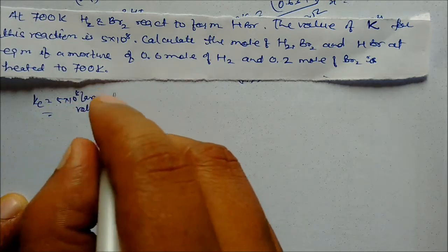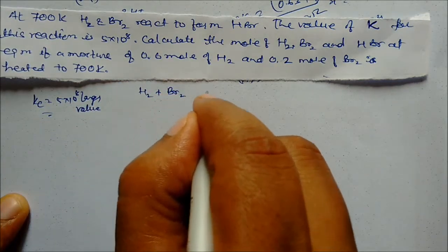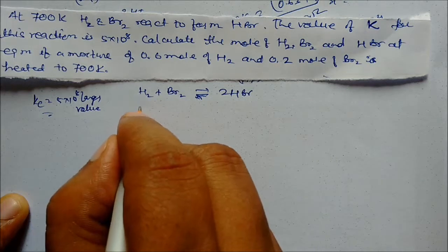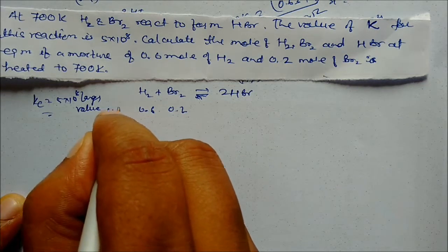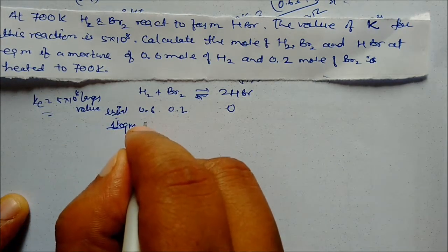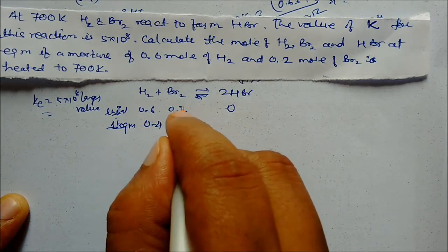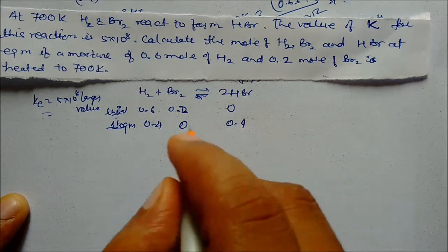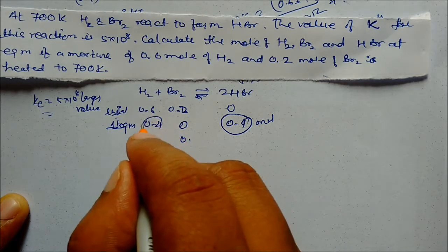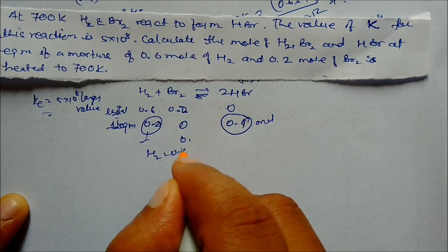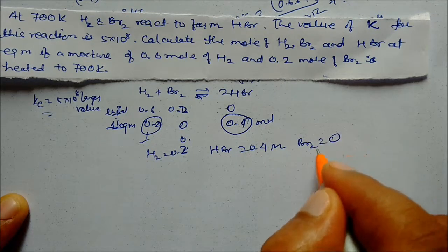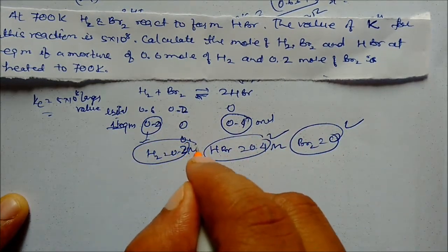Since Kc = 5 × 10⁸ is a very large value, the reaction will go to completion. Initial moles: H₂ = 0.6, Br₂ = 0.2, HBr = 0. At equilibrium: Br₂ is completely consumed, H₂ = 0.4, Br₂ = 0, and HBr = 0.4 mol. This is our answer.